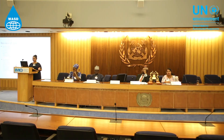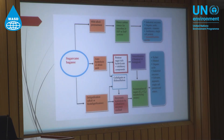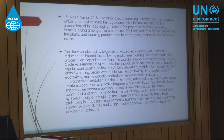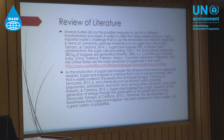So when a product can be used as a raw material for development of something else, why waste it? Major countries producing sugarcane bagasse include Brazil, India, China, Thailand, Pakistan, Mexico, Colombia, Indonesia, Philippines, and the United States. Most of these countries have tropical climates, so it's easier for sugarcane production.